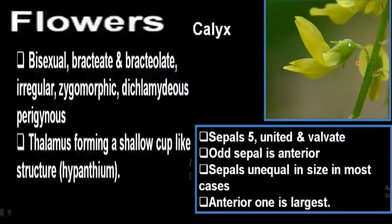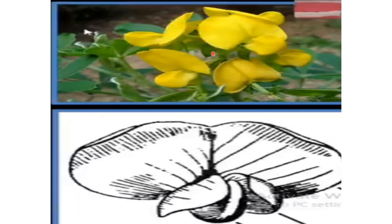Calyx: sepals 5, united, and valvate. The odd sepal is anterior. Sepals are unequal in size in most cases — the anterior one is the largest. Corolla: petals 5, free, irregular, and papilionaceous. The posterior petal is the largest — the standard petal. The standard petal overlaps the upper edge of the two lateral wing petals. On the anterior side, there are two keel petals which are temporarily united to form a boat-shaped structure. Keel petals enclose the essential organs.